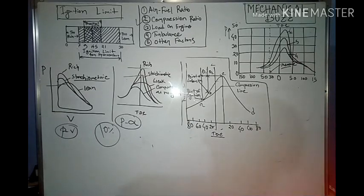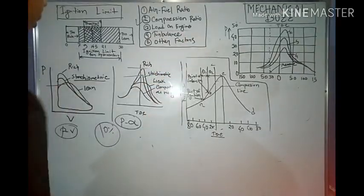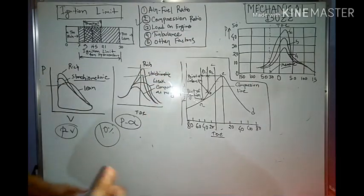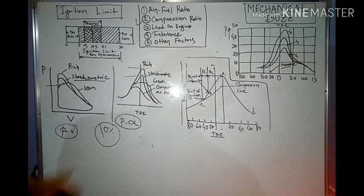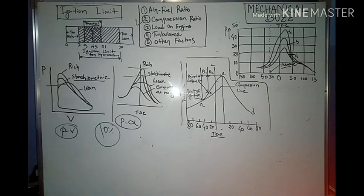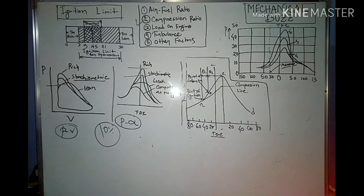The third factor is engine load. A loaded engine means that you have good throttle and the engine is producing output. Generally, if you press the car accelerator more, the car goes faster. Increasing the load on the engine increases combustion speed.